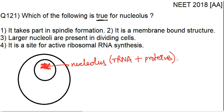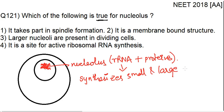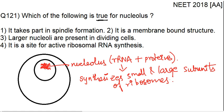Now let's see what is the function of nucleolus. Nucleolus produces or synthesizes small and large subunits of ribosomes. Ribosomes are nothing but the protein factories — the actual making of protein from an mRNA molecule. You have the information in the mRNA molecule, and that information present in the mRNA molecule should be translated to a protein. That is done with the help of a ribosome, and in a ribosome you have two subunits: a larger subunit and a smaller subunit.